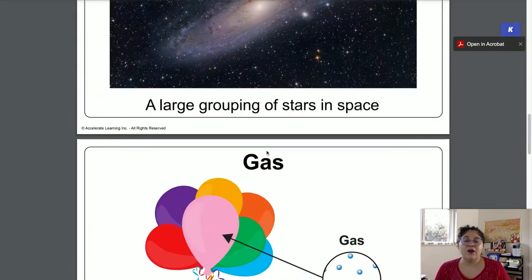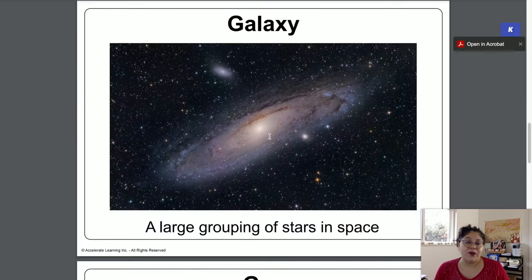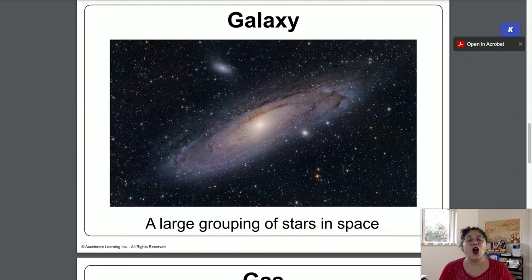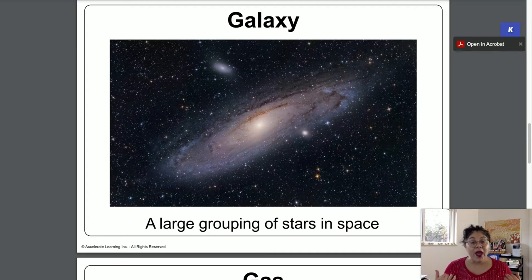The next vocabulary word is galaxy. A galaxy is a large group of stars clustering together in space. And we are in a galaxy called the Milky Way, and our Milky Way is a very specific type of galaxy.